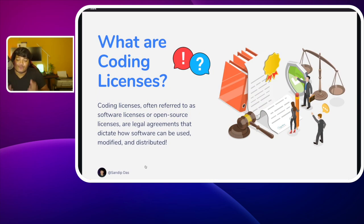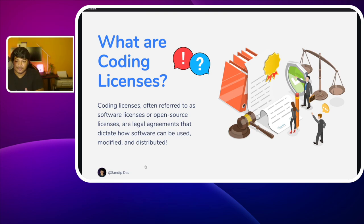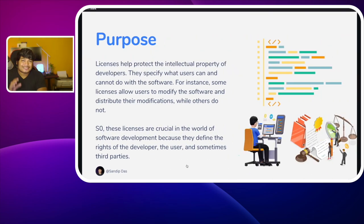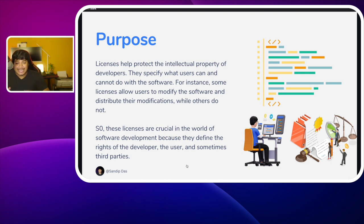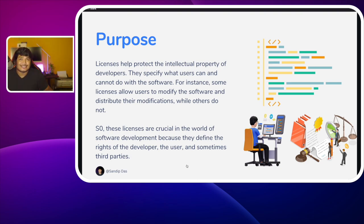First, let's understand what these coding licenses are. These coding licenses, often referred to as software licenses or open source licenses, are legal agreements that dictate how software can be used, modified, or distributed. Licenses help protect the intellectual property of developers and specify what users can and cannot do with the software. Some licenses allow users to modify and distribute the software, while others don't. These licenses define the rights of the developer, the user, and sometimes even third parties.